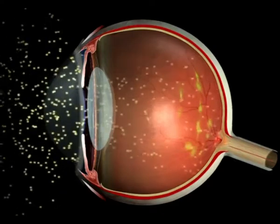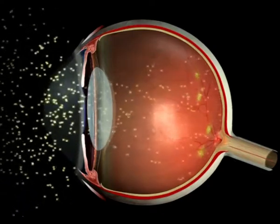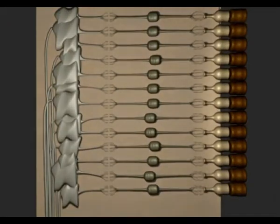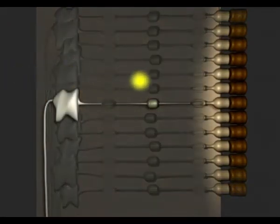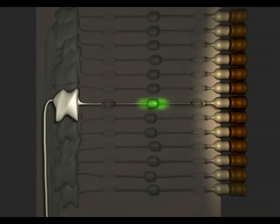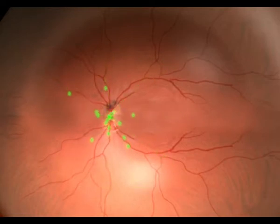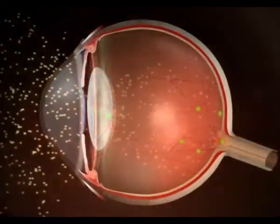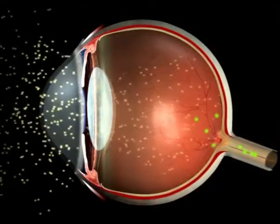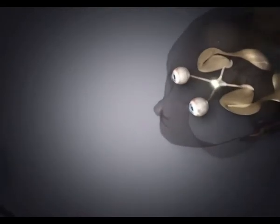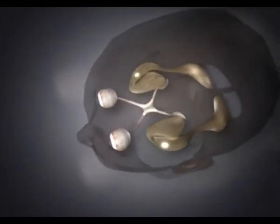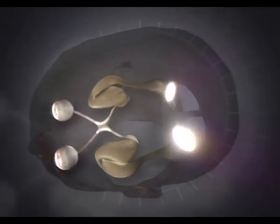Finally, they reach the retina, the eye's photographic plate, stopping at the retinal pigment epithelium, where they set off nerve pulses. These pulses are directed towards the optic nerve, and then the optic pathways, before arriving at the occipital brain, where the image is formed.